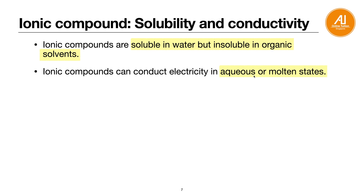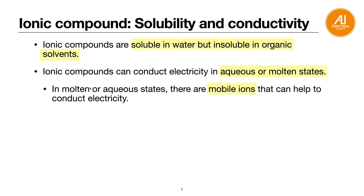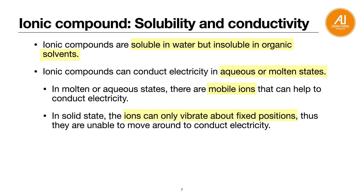In molten or aqueous states, there are mobile ions — positive cations and negative anions — and these ions are free to move, which is why they can conduct electricity. But in solid state, the ions can only vibrate about a fixed position and are unable to move around to conduct electricity. The ions are always there — it's just a matter of whether they are free to move or not.